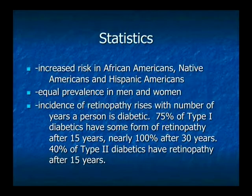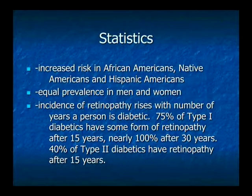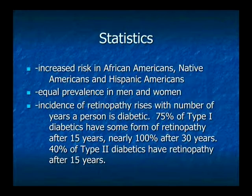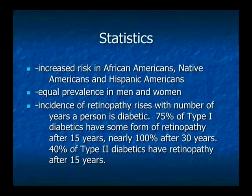It makes sense that the longer a person has diabetes, the more likely it's going to affect the eyes. About 75% of type 1 diabetics have some form of retinopathy after 15 years of being diabetic, and nearly 100% after 30 years. With type 2 diabetics, about 40% have retinopathy after 15 years. This doesn't mean it's severe retinopathy or there's loss of vision — it just means there's some form of diabetic retinopathy.